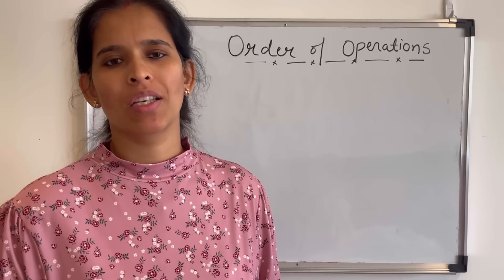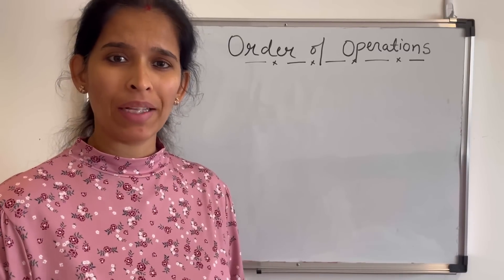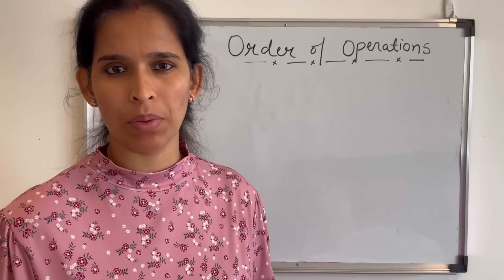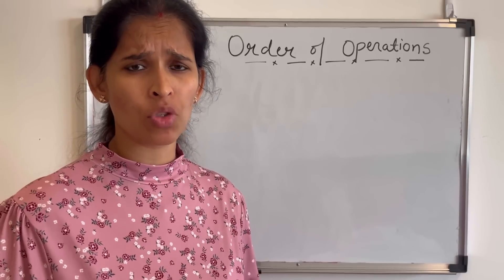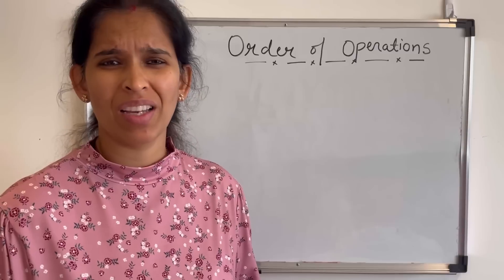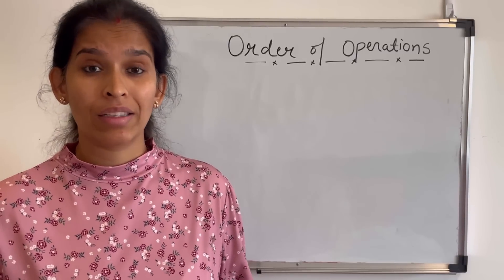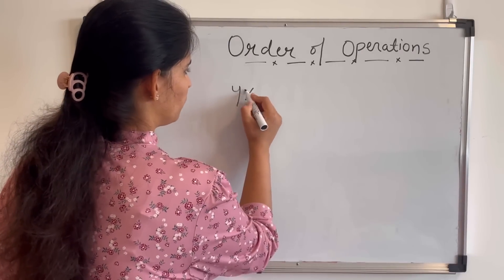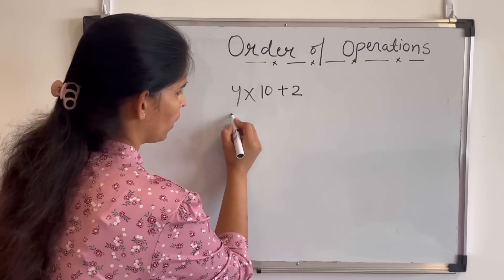Hello everyone, welcome to Just Maths. Today we are going to learn about order of operations in mathematics. There are some set of rules which we use to solve our problems. Suppose if I have a problem where two or three operations come together, then we have to follow that rule. Now you must be wondering why do we need to learn rules to solve our problems. I'll explain it through an easy example. Suppose I have this: 1 plus 2.